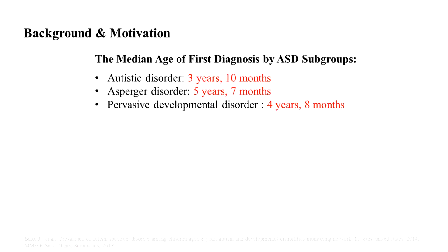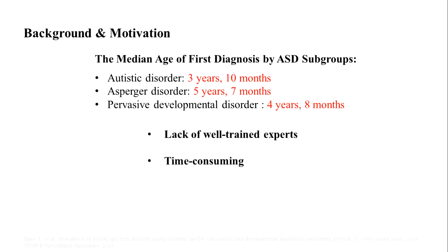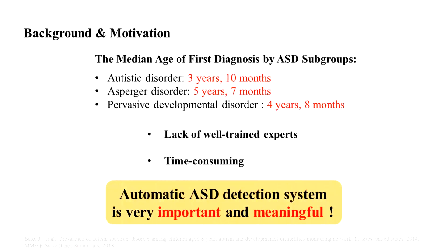Let's have a look at the median age of first diagnosis by ASD subgroups. Research has shown that a diagnosis of ASD at age 2 can be reliable, valid, and stable. With the prevalence of ASD increasing year by year, many children may not be diagnosed as early as possible. So an automatic ASD detection system is very important and meaningful.